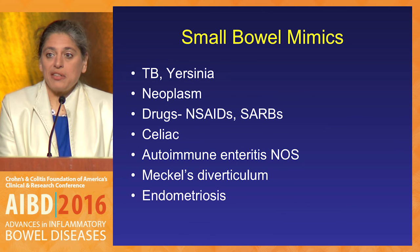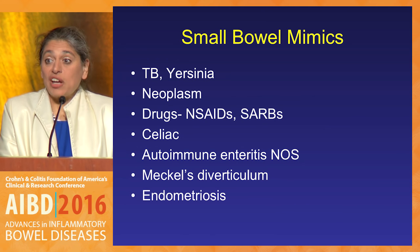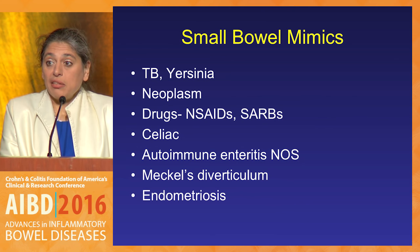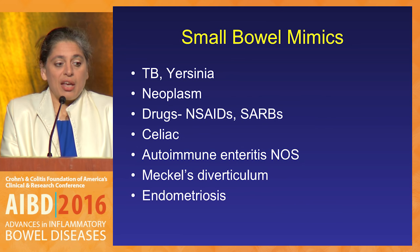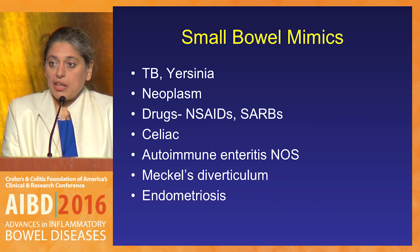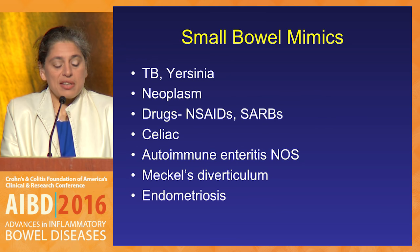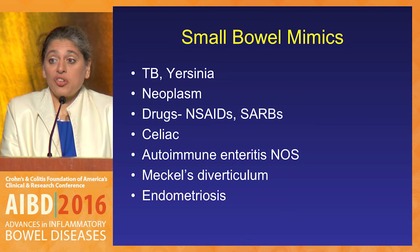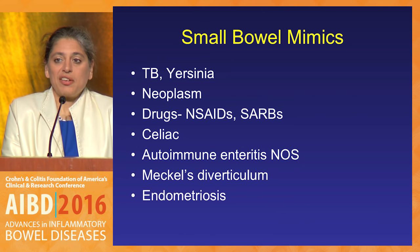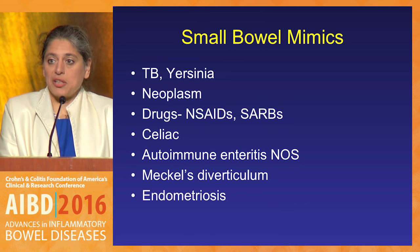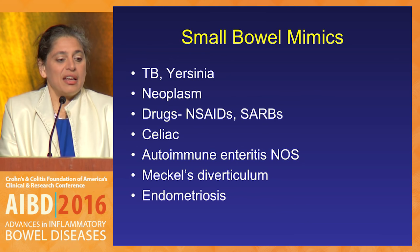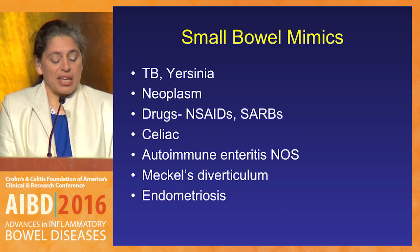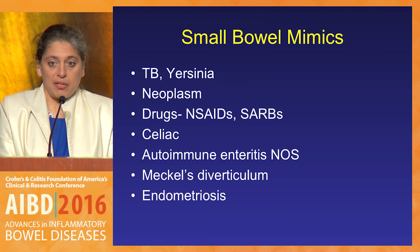In the small bowel, lots of things can look like Crohn's. Certainly infections — TB and Yersinia. Never forget about neoplasms, especially as our population ages. Medications including NSAIDs and angiotensin blockers as a class can give you enteropathies. Celiac disease, as I showed you on small bowel. And there's autoimmune enteritis not otherwise specified, which smells and looks like Crohn's but really isn't. Also Meckel's diverticulum and endometriosis in the right phenotype.